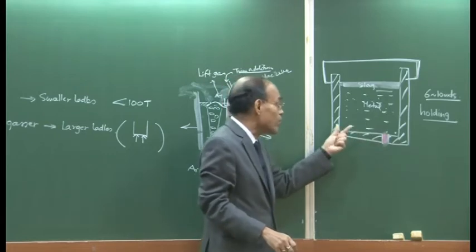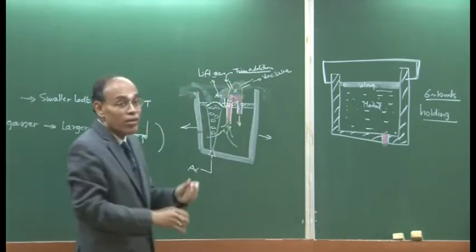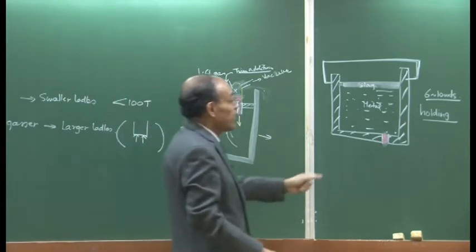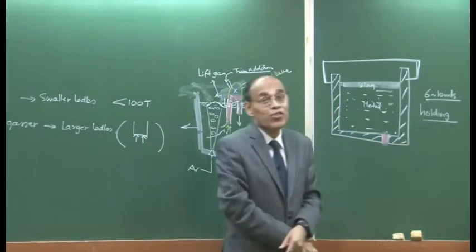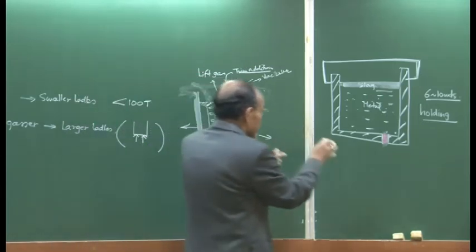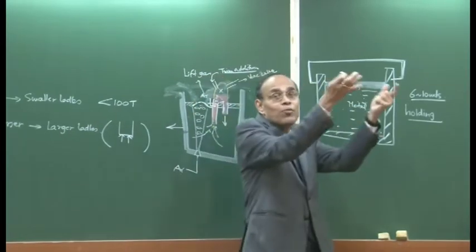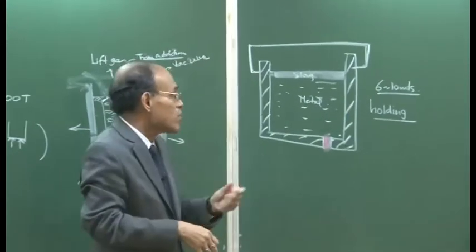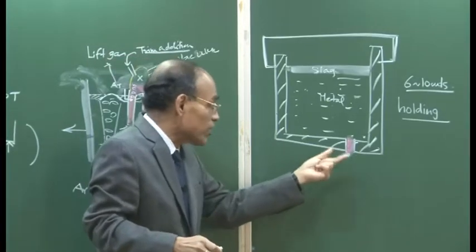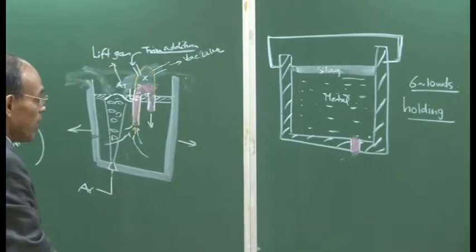During the holding period, there will be a temperature drop. For a large ladle, 10 minutes of holding can account for about 6 degrees centigrade drop in temperature. After the holding period, the ladle is lifted and placed in the turret above the continuous caster, or brought to the ingot casting route, ready for the subsequent casting operation.